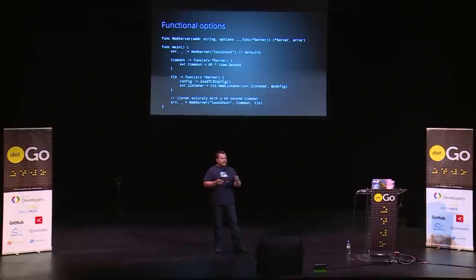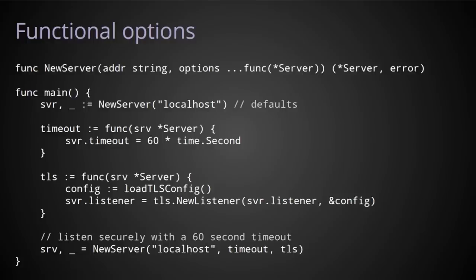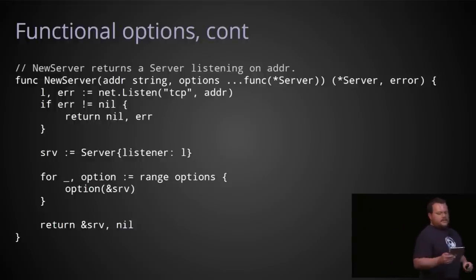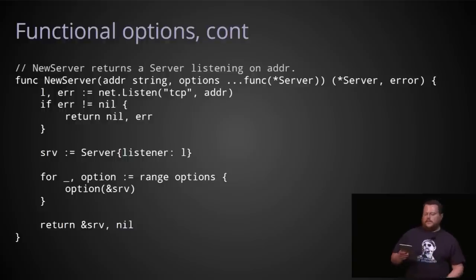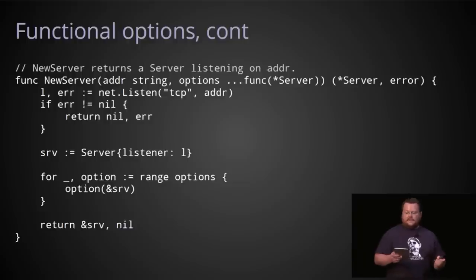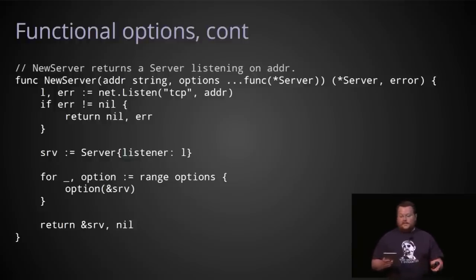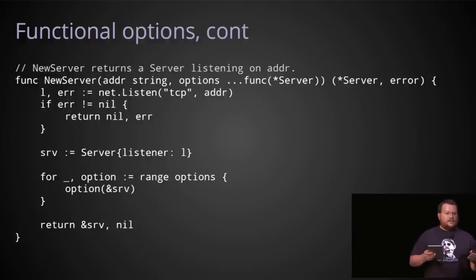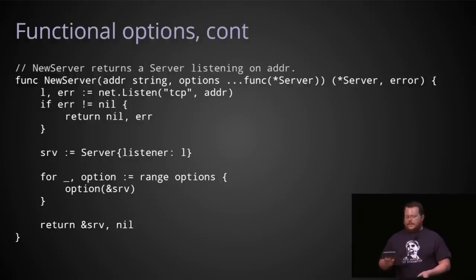The key difference from all of the examples I've presented so far is that customization of the server is performed not with configuration parameters stored in a structure, but with functions which operate on the server value itself. As before, the variadic nature of the function signature gives us the compact behavior we want for the default case. When configuration is required, I pass new server functions which operate on the server value itself. The timeout function simply changes the timeout field of any server value passed into it. The TLS function is a little more complicated: it takes the server value, wraps the original listener inside a TLS listener, and puts that back into the server field, converting an insecure server into a secure server. Inside new server, applying these options is straightforward — if no option functions are provided, there's no work to do and the server value remains at its default.